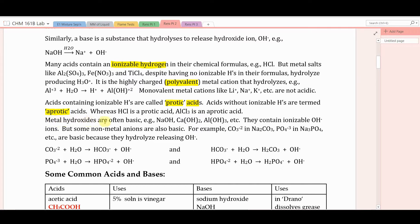Metal hydroxides are often basic. For example, sodium hydroxide, calcium hydroxide, aluminum hydroxide. They contain ionizable hydroxide ions. But some nonmetal anions are also basic. For example, carbonate in sodium carbonate and phosphate in sodium phosphate.